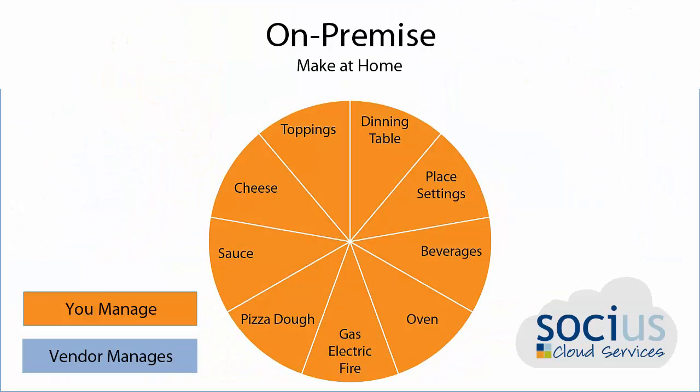The traditional or on-premise example for pizza is being made at home. This is a list of all the components you need to make that pizza successful: a dining room table, soda, some sort of electric or gas device to heat the pizza, the oven, pizza dough, tomato sauce — all the ingredients that make a pizza.